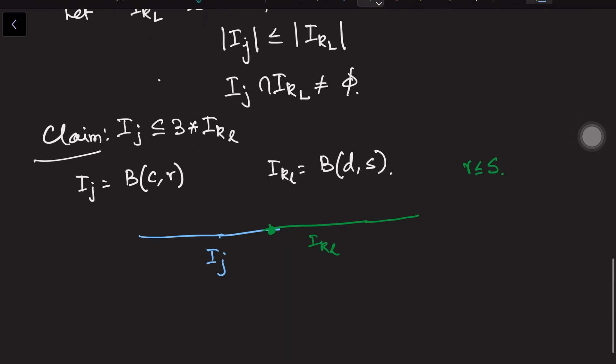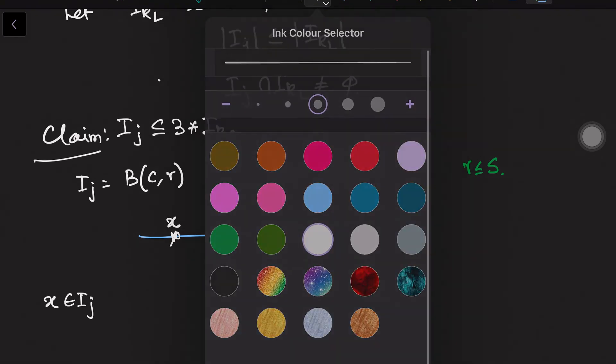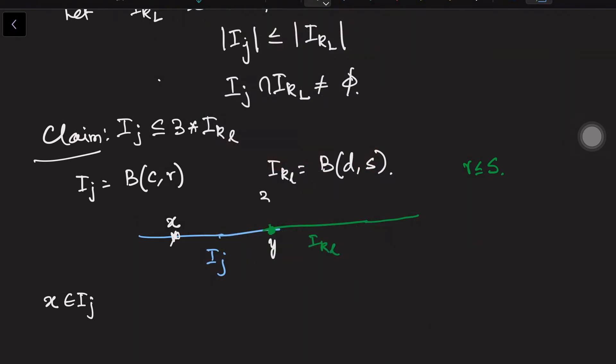So let us say the intersecting point is some y. Now all that I need to prove this statement. So let us start with suppose x is in i_j. So I will start a point x here. I need to show that x is on the other side. That means 3 times i_kl. If i_kl is this, what is 3i_kl? It is same center but 3 times the radius.